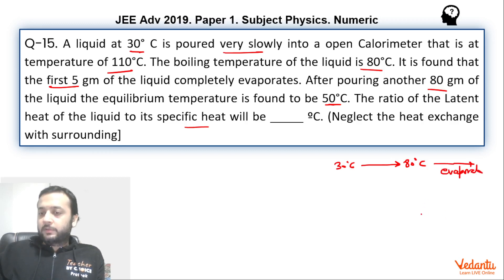And from here, calorimeter would have come from 110 degrees celsius to 80 degrees celsius. We can say that because it is given first 5 grams evaporates. Beyond this, there is no evaporation.